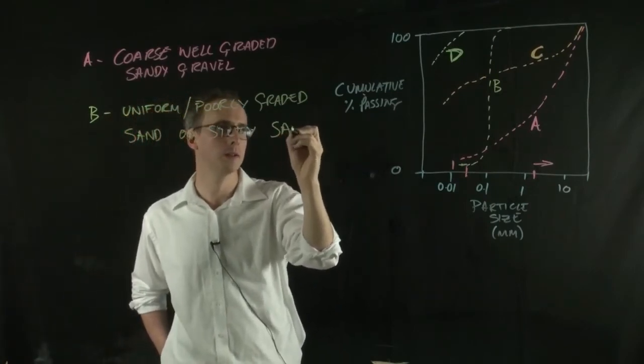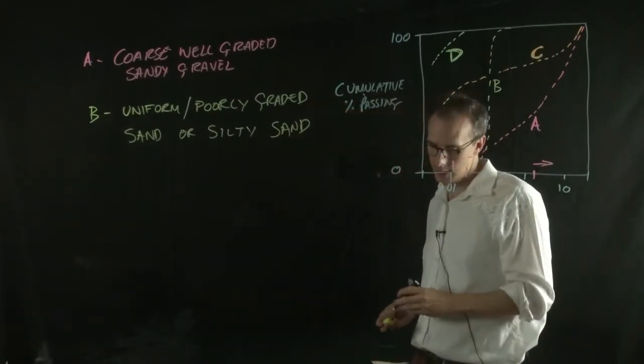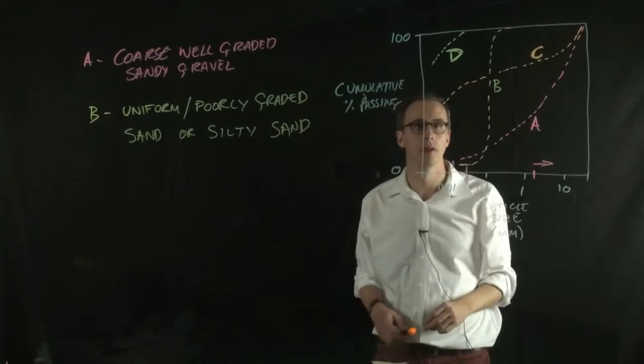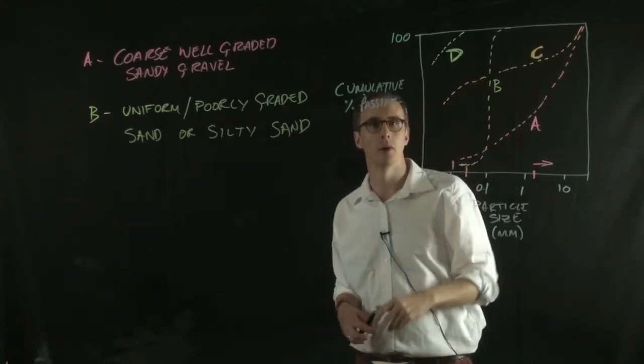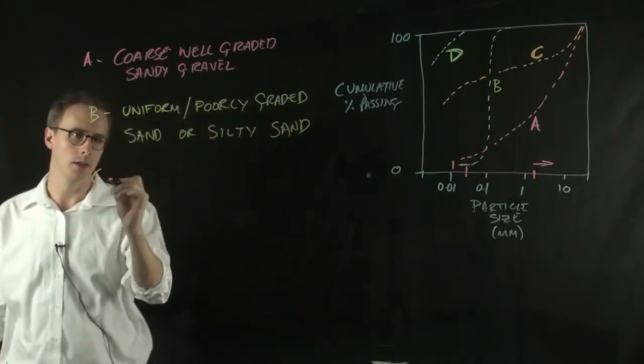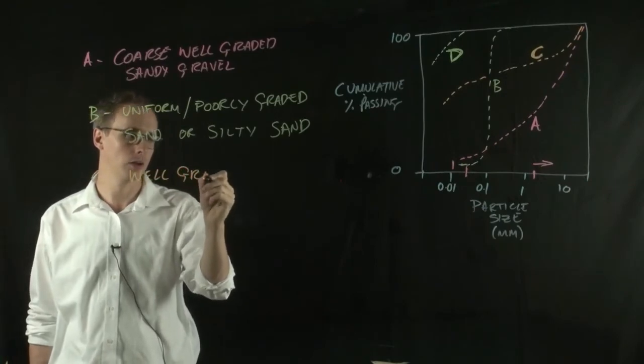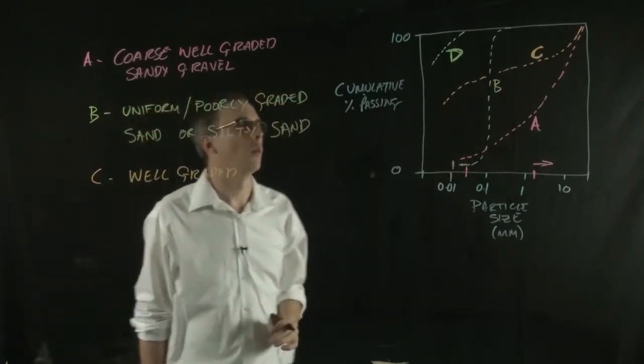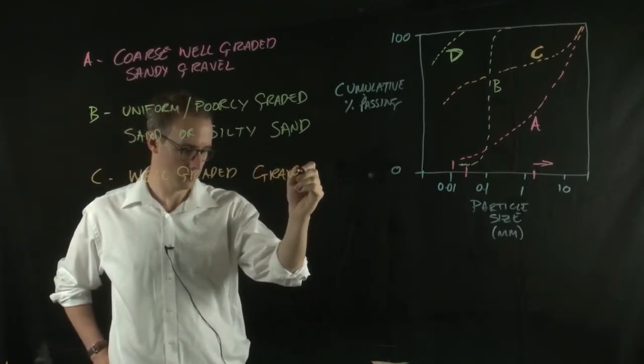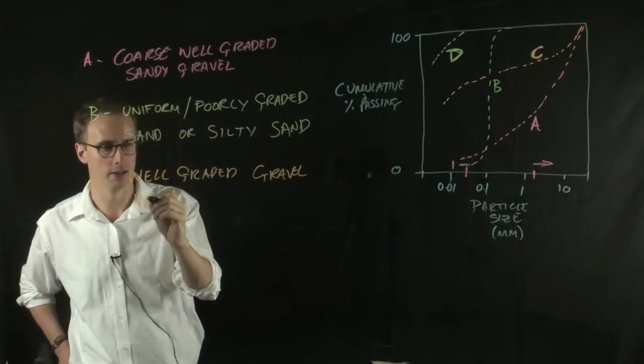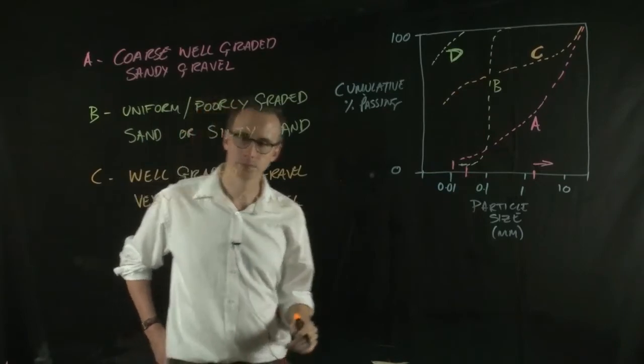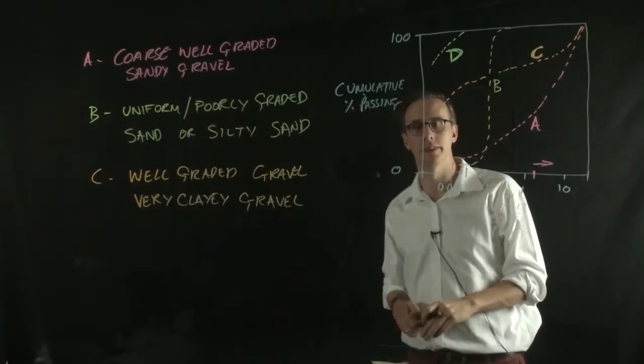We can see that C has a lot of the material measured on the graph here. We can call that well-graded because we've got quite a wide particle size distribution. We can say that it's either a well-graded gravel or a very clayey gravel, because you've got a lot of the particle size material within the clay fraction.